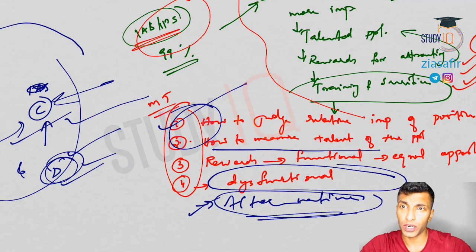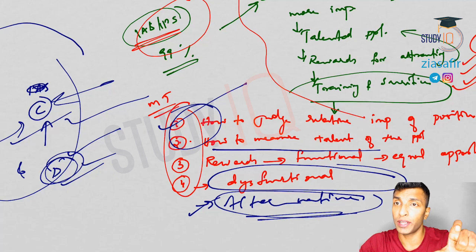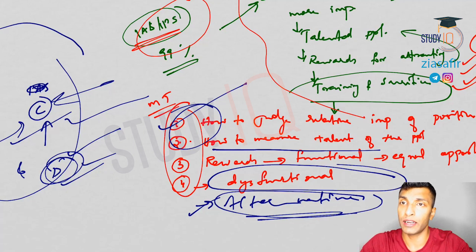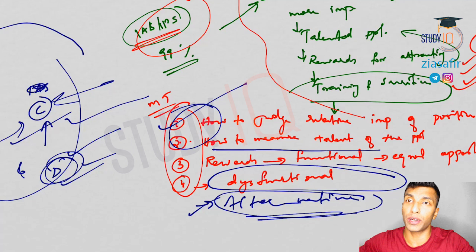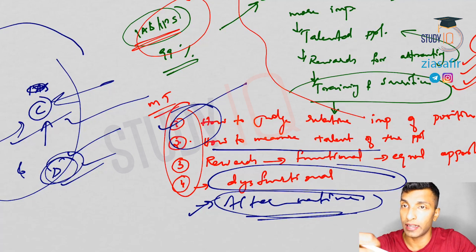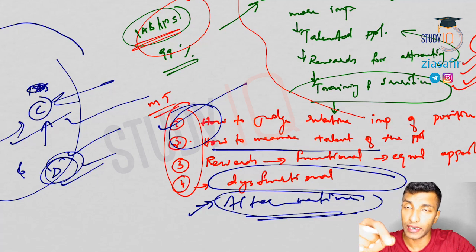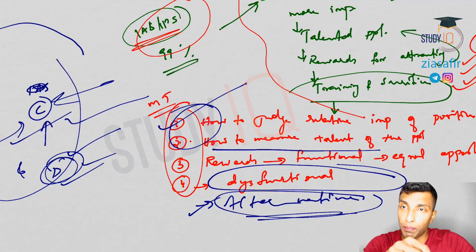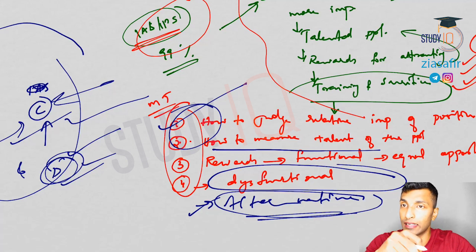So these are the clarifications given by Davis and Moore, out of which the first one — how to judge the relative importance of a position — is the most important. I hope you understood this theory. These three parts together form the theory, and you need to write all three. If the question asks for critical analysis, that I'll discuss in the next session. In the next video, I will also talk about W.L. Warner and discuss the PDF of this theory.